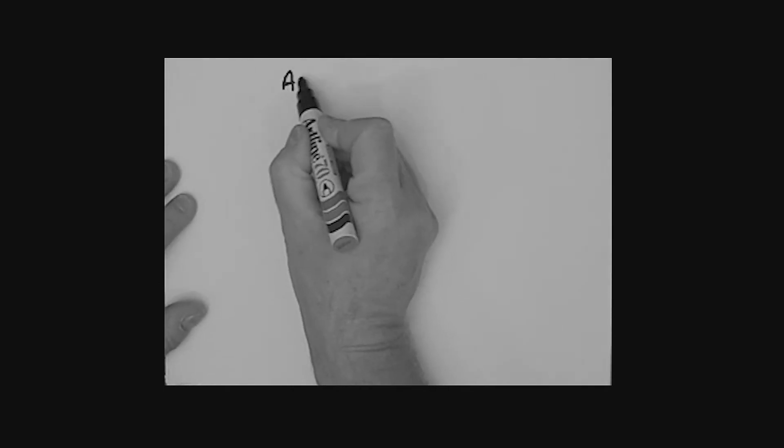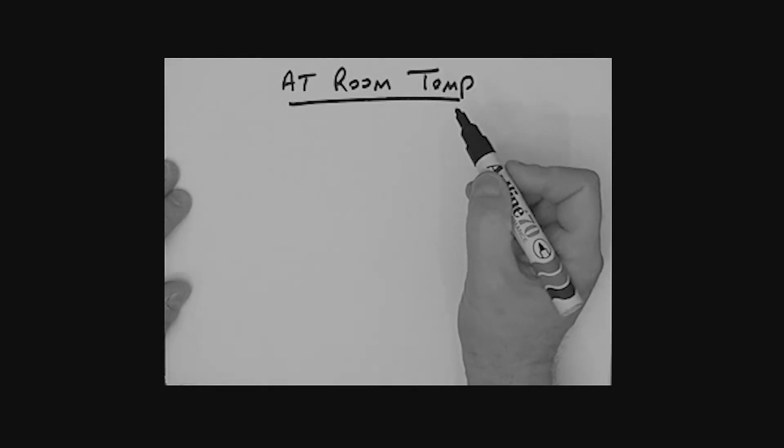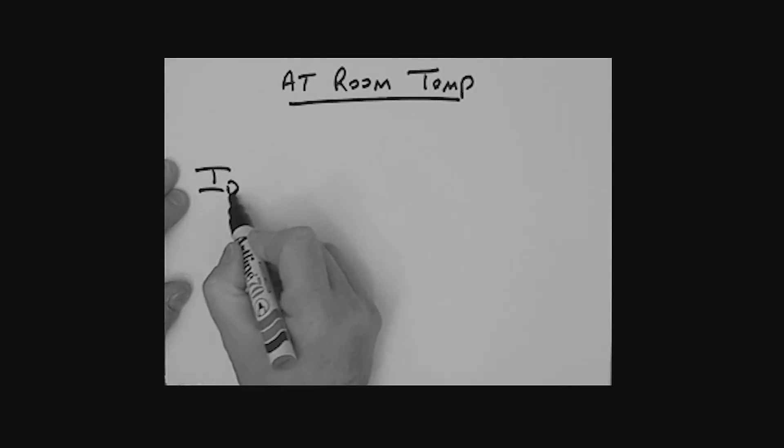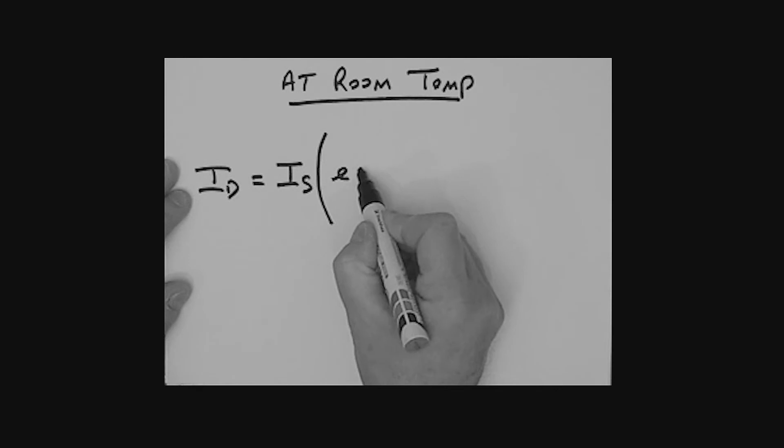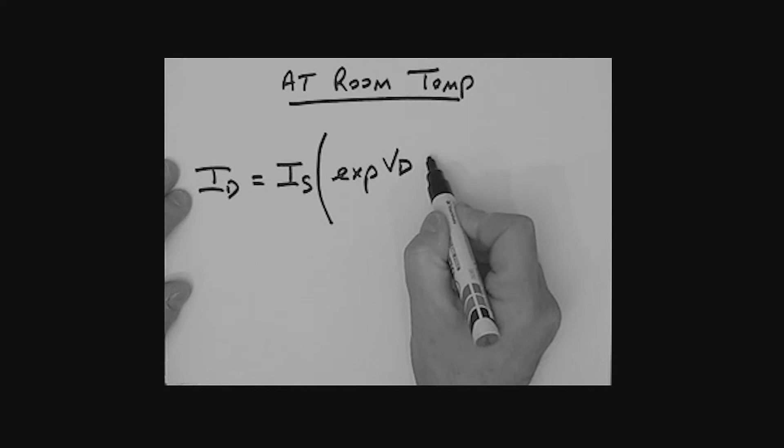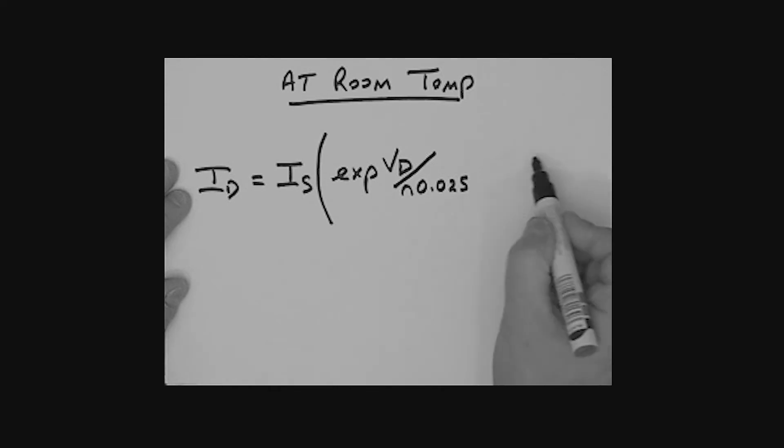At room temperature, ID is equal to IS, opening up a big bracket, the exponential function. Voltage across the diode, this voltage across the diode is then divided by N times 0.025. That's putting in the value of Q, Boltzmann's constant, and assuming a temperature at room temperature. And then a minus one.